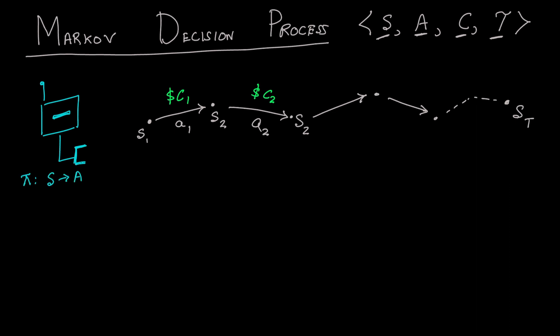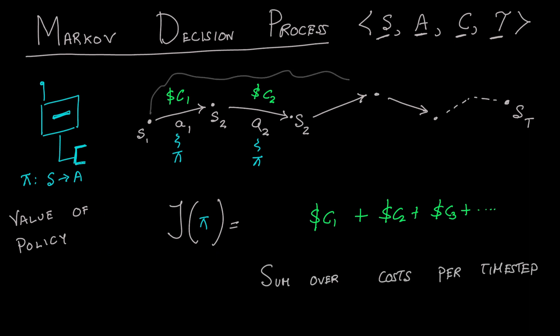The policy pi tells a robot what actions to take at a particular state. The value of a policy is simply the sum of the cost it receives at every time step. Since the MDP can be stochastic, the robot may have to roll out its policy multiple times and take an average to compute an expected value. Finally, the goal is to find the optimal policy that minimizes this value.